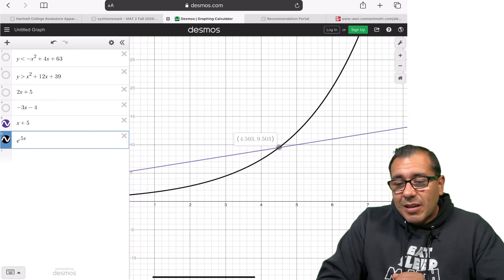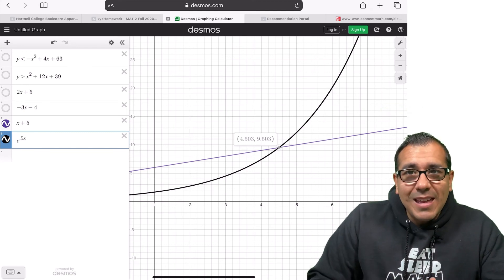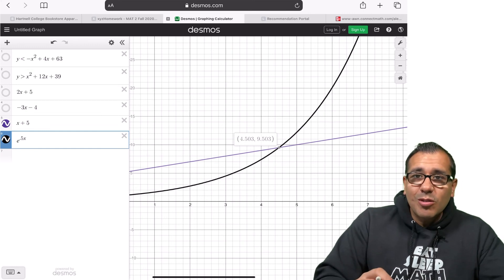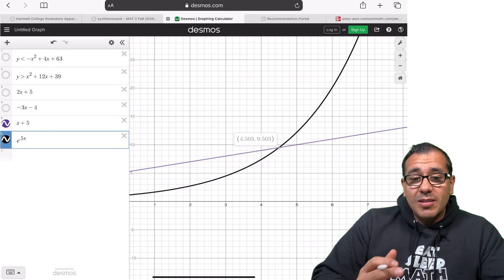And we can see that the x value right there where they intersect is 4.503. And it's that easy, folks. So I just want to give you a short little tutorial of how to use Desmos to see where functions intersect.